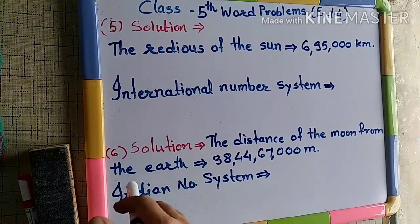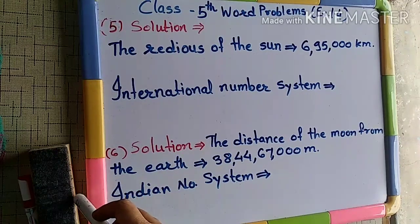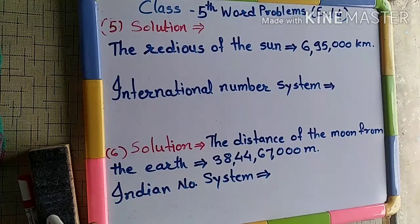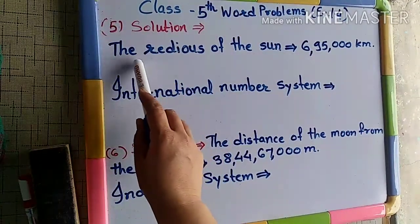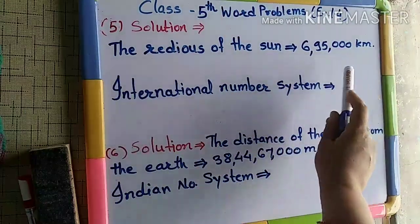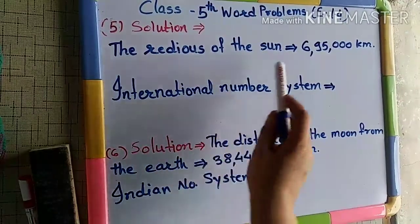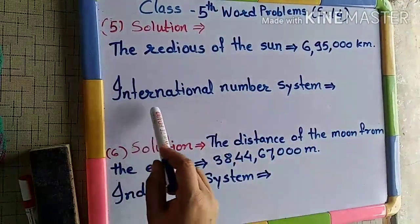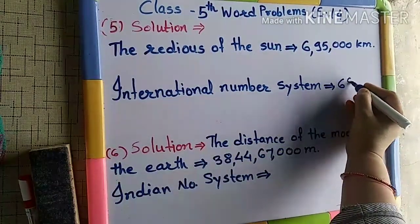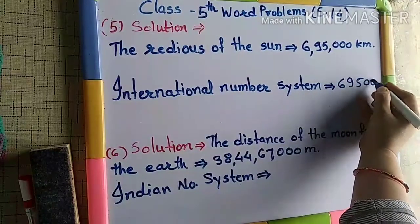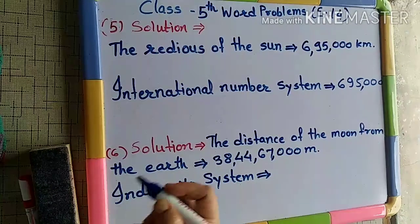Read: the radius of the sun is approximately 6,95,000 km. Write the number name in the international number system. This is the fifth one. The solution we will write like this — the radius of the sun equals 6,95,000. We have to write the number name of this number in the international number system. So first we will write the number like this, and then we will put commas according to the international number system.